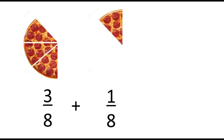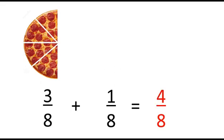But how about adding them using the correct process? First, we need to add the numerators: 3 plus 1 equals 4. Then, since we have the same denominators, we will just copy the denominator which is 8, and the sum is 4 eighths. 4 eighths is a higher term, so we need to simplify it to 1 half.